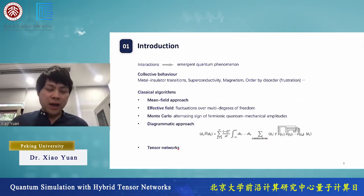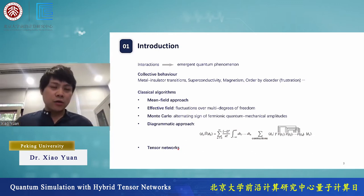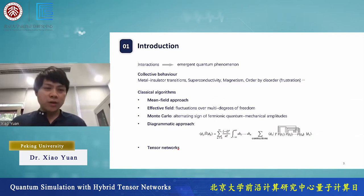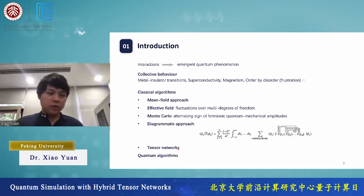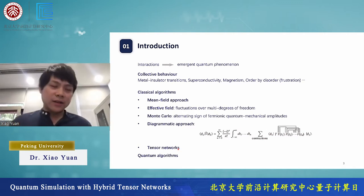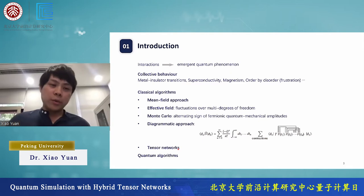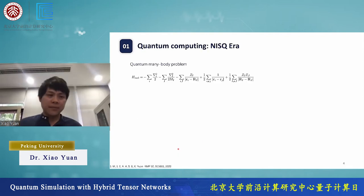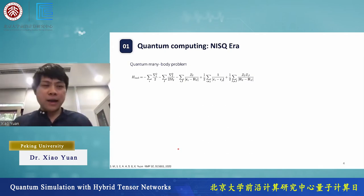Using a classical approach to study a general quantum problem seems to be impossible. An alternative approach suggested in the last century is to use a quantum computer to solve the quantum problem. For example, we can consider a many-body problem like the electronic structure of a molecule.